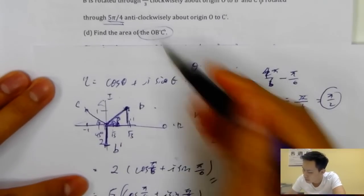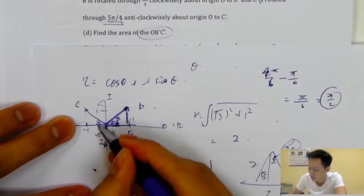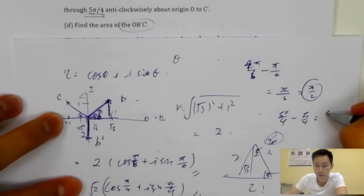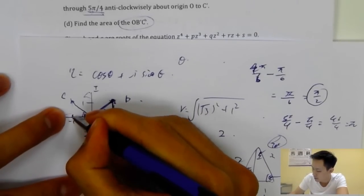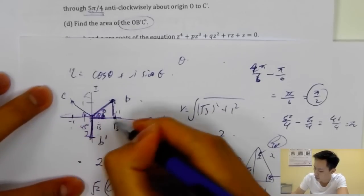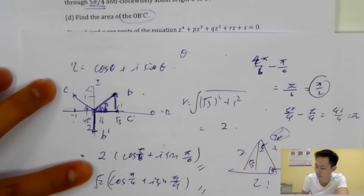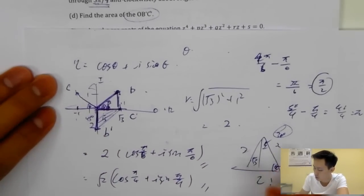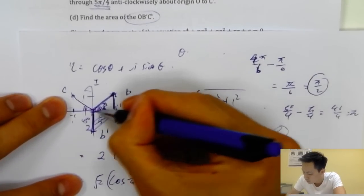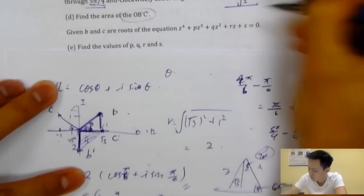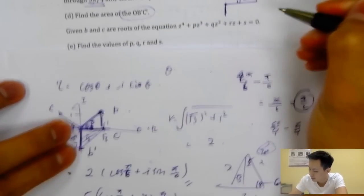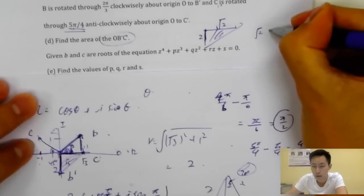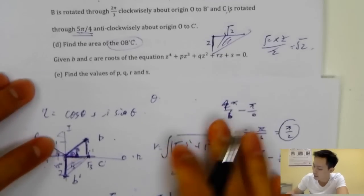For C: it's at pi over four already. Rotating anti-clockwise by five pi over four gives five pi over four plus pi over four, which is pi plus pi over four... actually, five pi over four minus pi over four equals four pi over four, which is pi. So C' is at angle pi, with modulus root two. These points form a right-angle triangle, so area equals base times height divided by two: root two times two divided by two, which is root two.